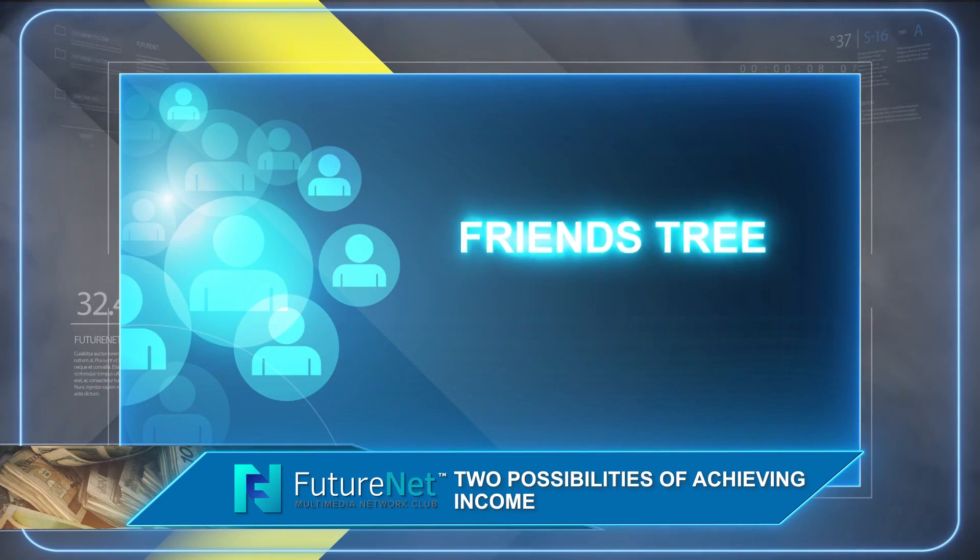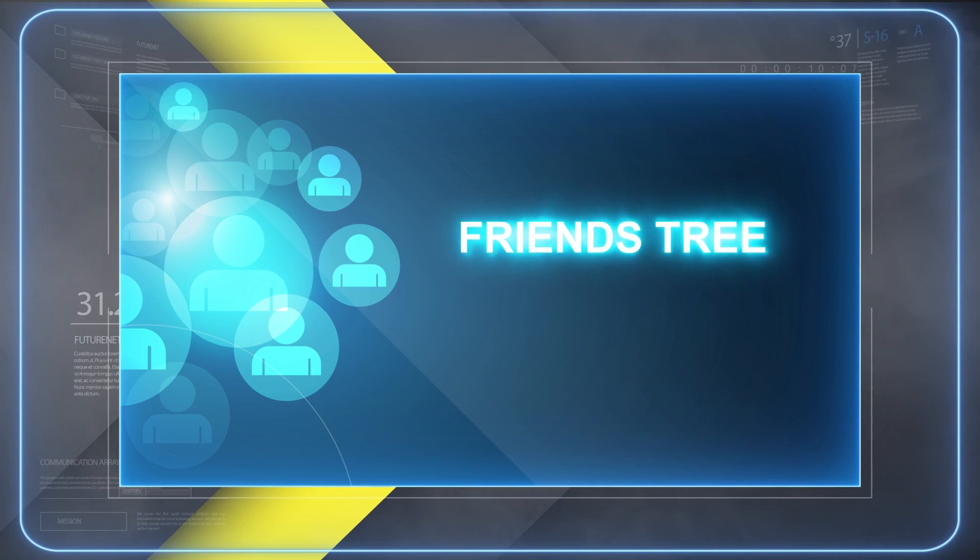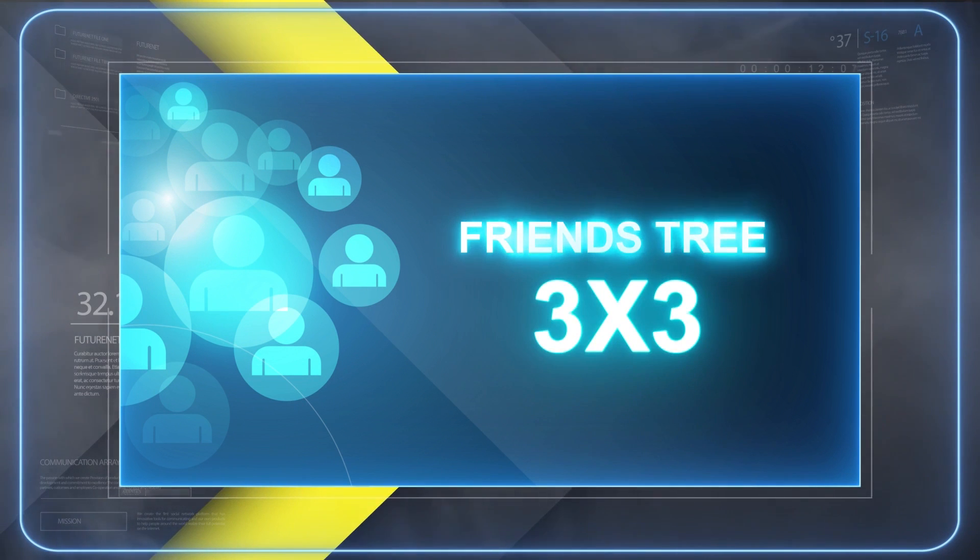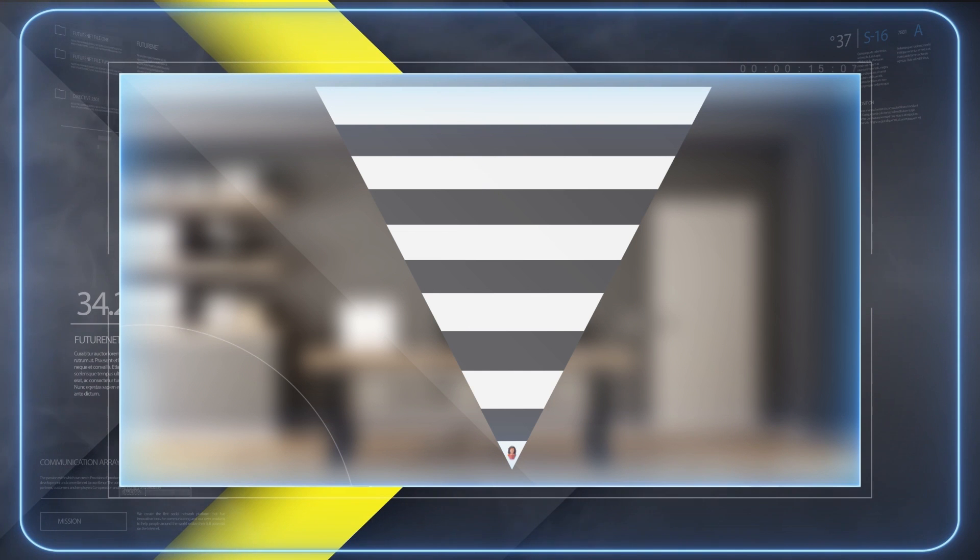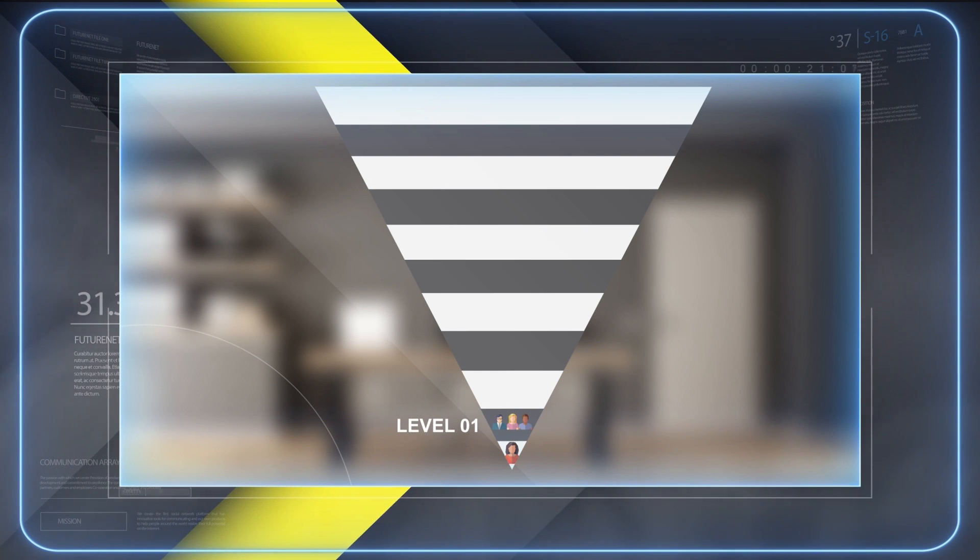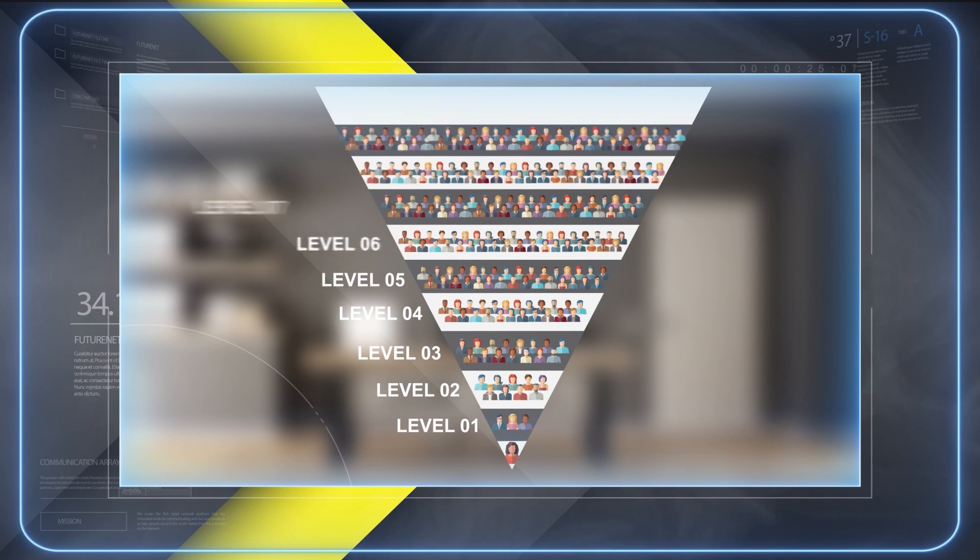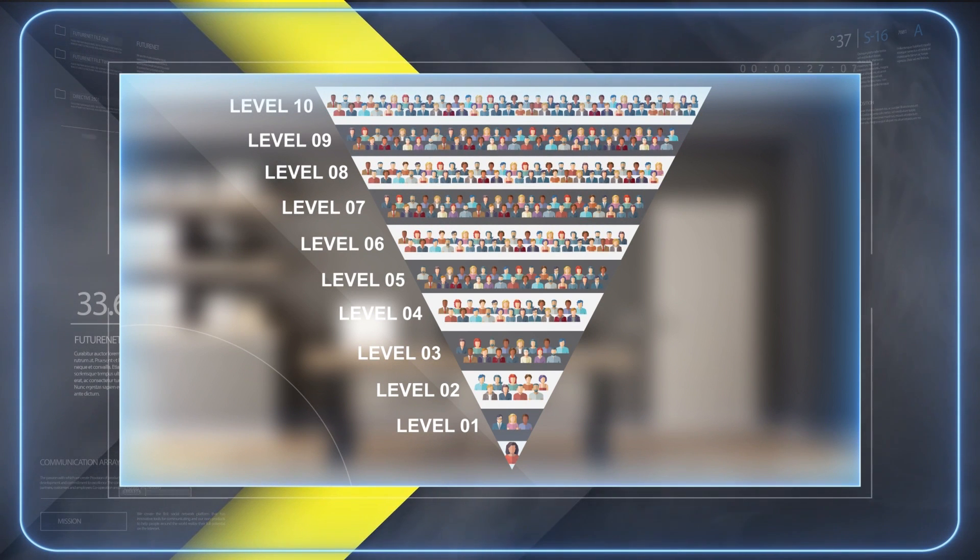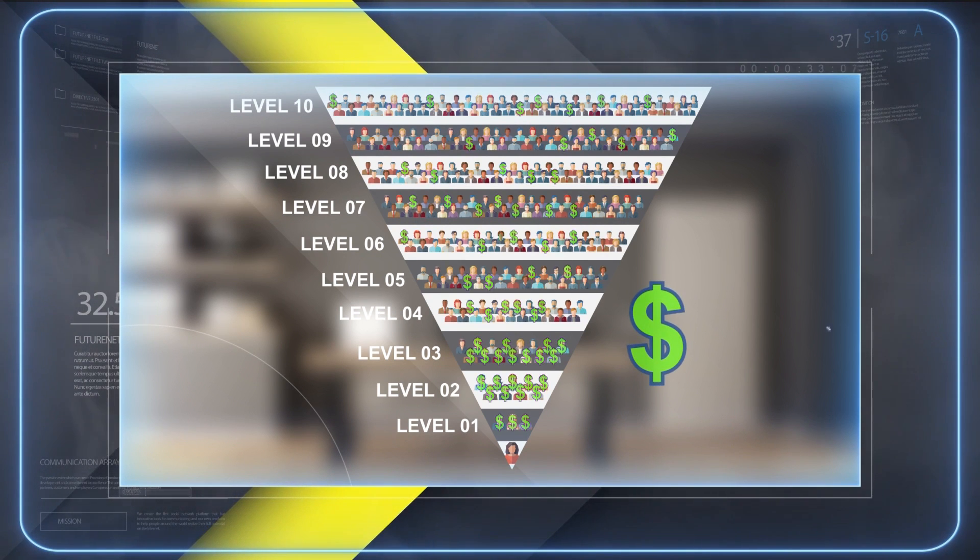In the case of Friends Tree Bonus, we speak of a so-called 3x3 matrix at 10 depth levels. 3x3 means that each person can sponsor only 3 persons at their first level. Numbers 4, 5 and each subsequent number are placed at level 2 or higher. The earnings stem from the fact that for each person at all 10 levels, you receive 5% commission from their purchases.